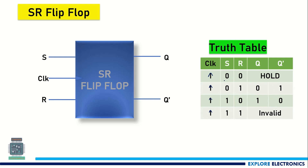Let us look at the truth table. When S=0 and R=0, the SR flip-flop output is a hold state — it holds the previous state of output Q as its new state. When S=0 and R=1, Q will be 0; we call it the reset state. When S=1 and R=0, Q will be set to 1; we call it the set state. When S=1 and R=1, the output is invalid — we cannot determine Q and Q bar, so we call it the invalid or high impedance state (Z).